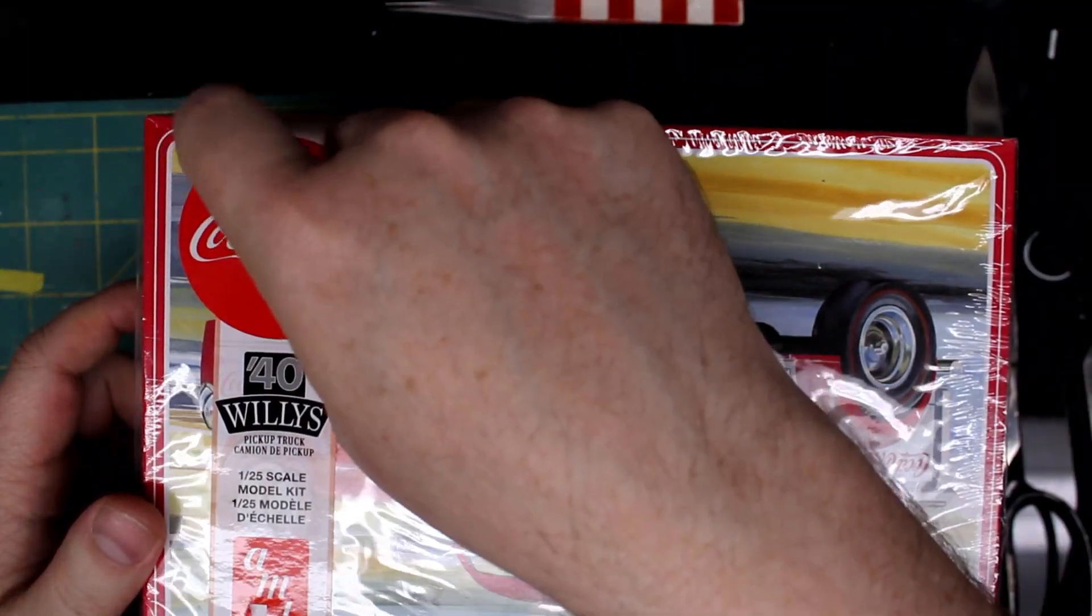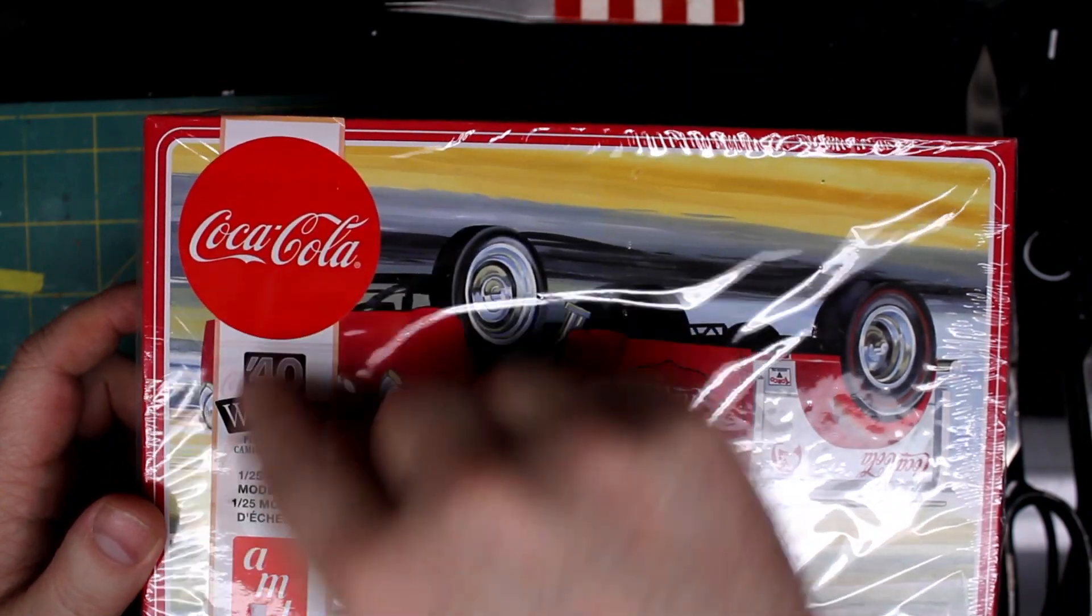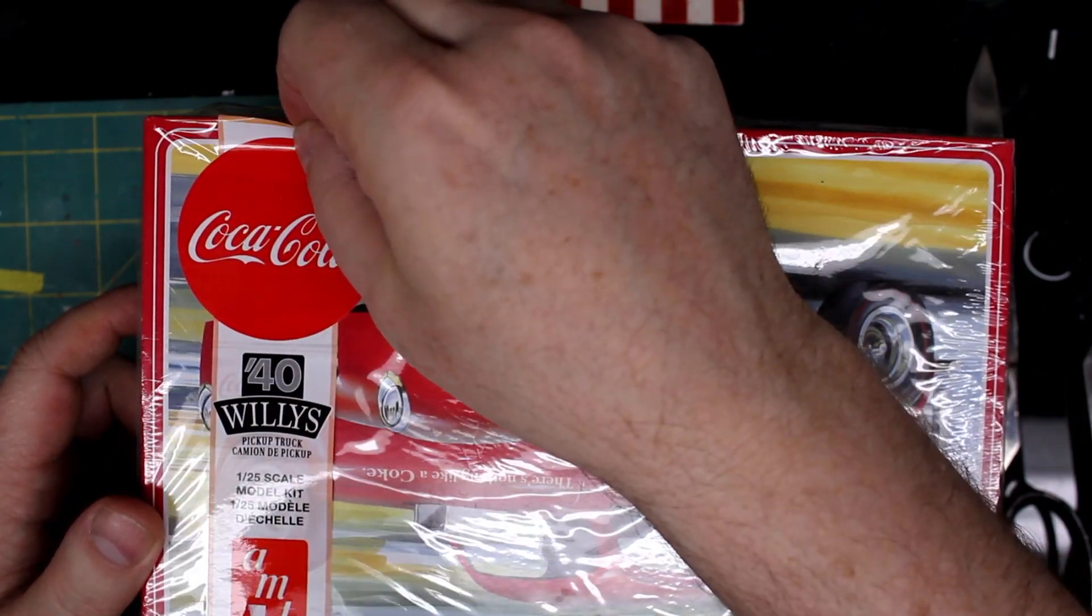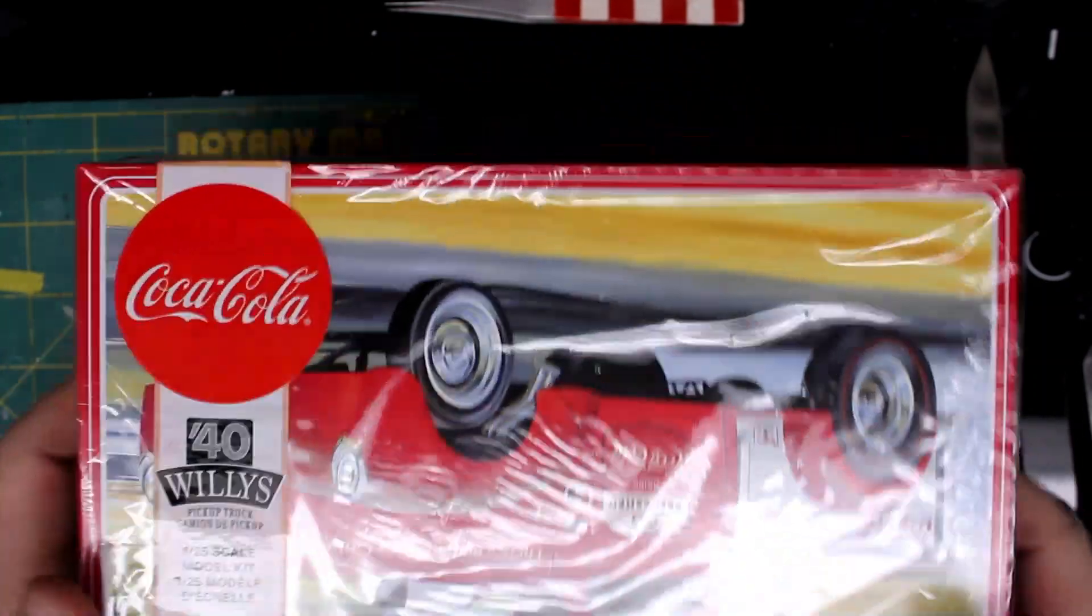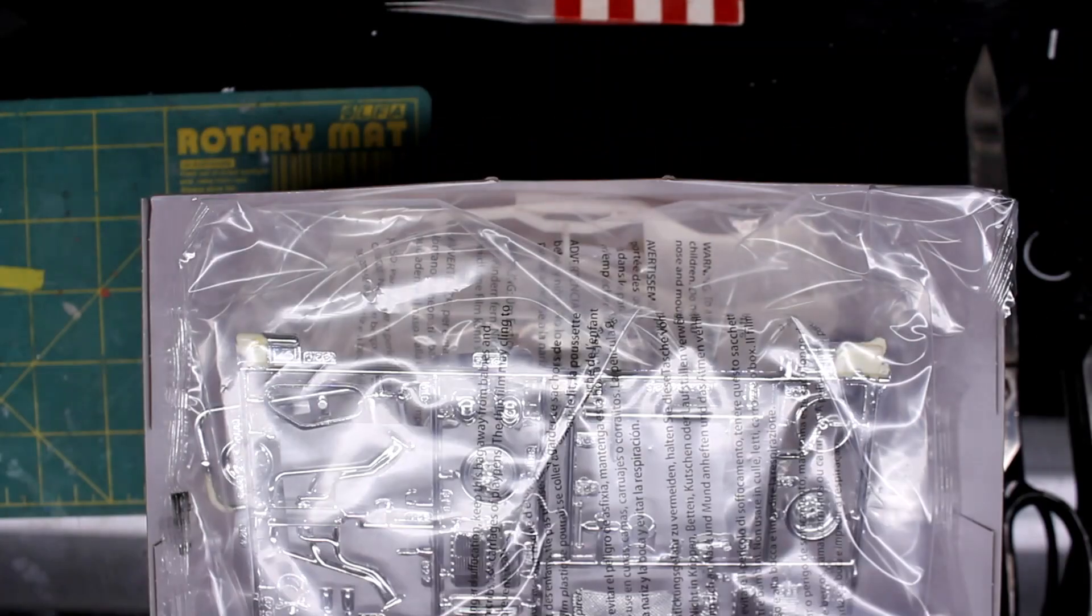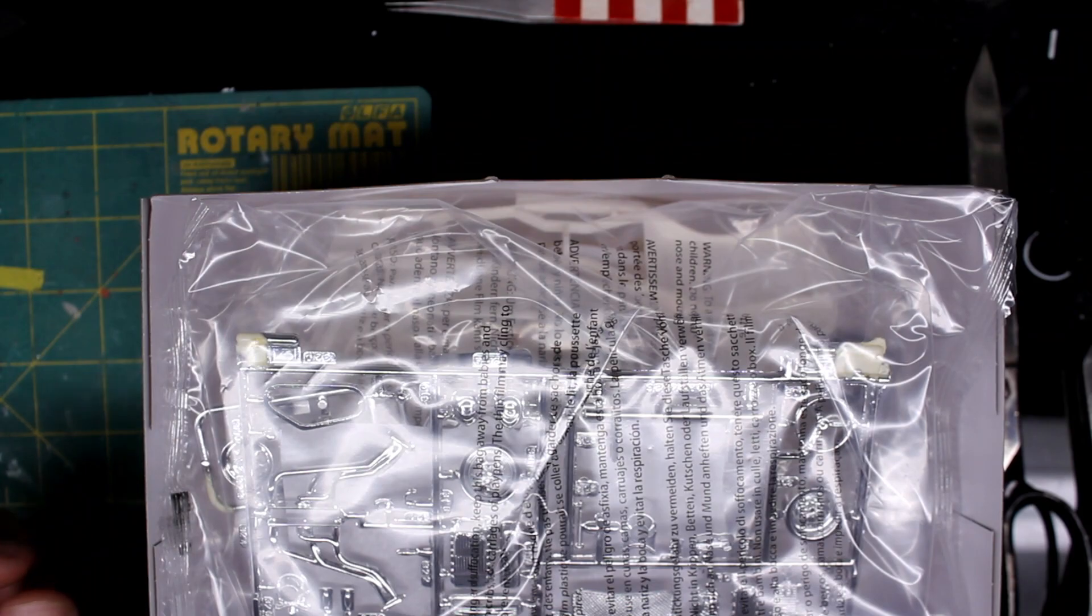And also, nope, you know what? That's all one sticker there. But I bet if I was careful I could peel that off, cut out the Coca-Cola, put it on my toolbox, as we are wont to do with stickers.